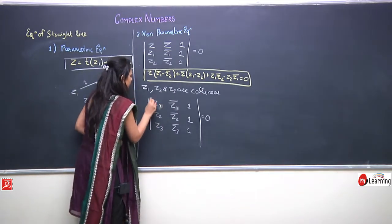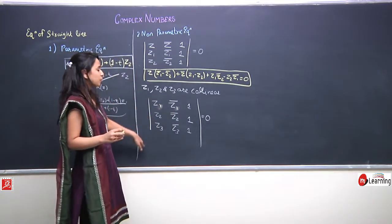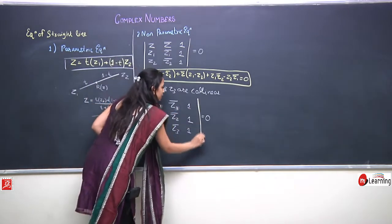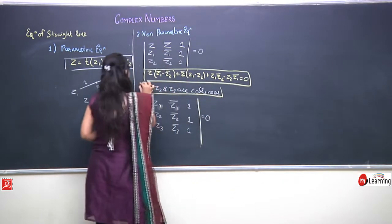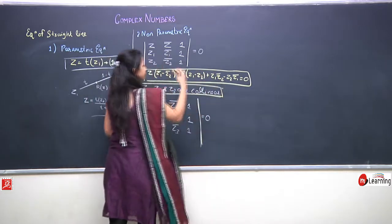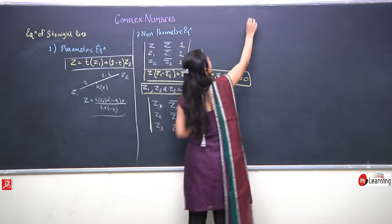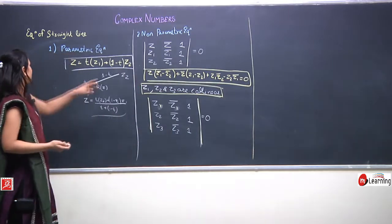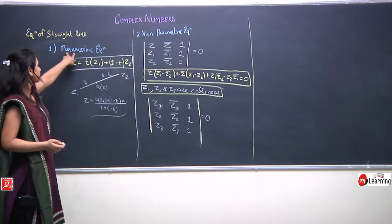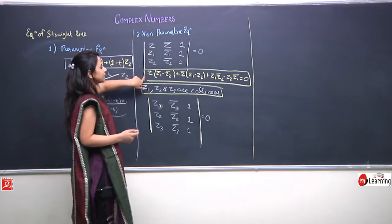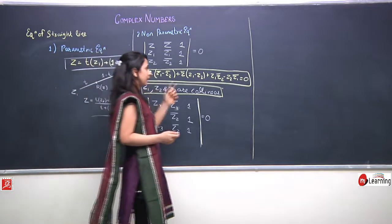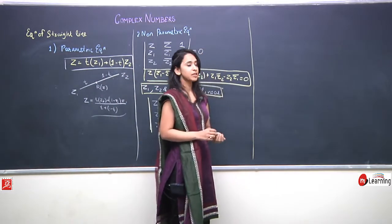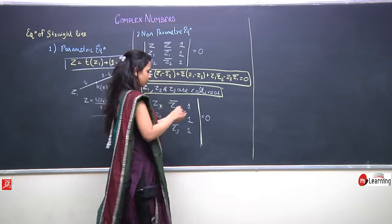For three points z1, z2, z3 to be collinear, the value of this determinant has to equal zero. We have derived the equation of a straight line in terms of parameter t and also the non-parametric form. Now, based upon these two equations, let us write the general equation for a straight line in case of complex numbers.